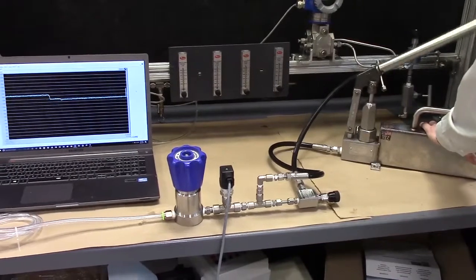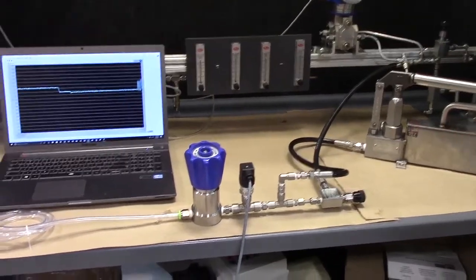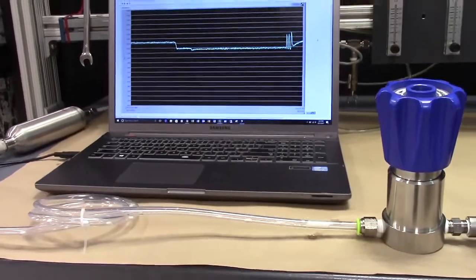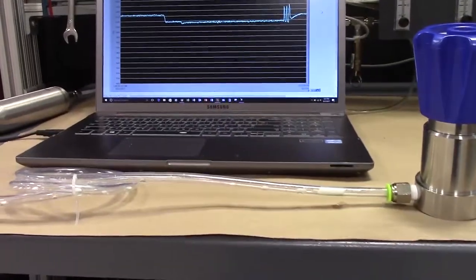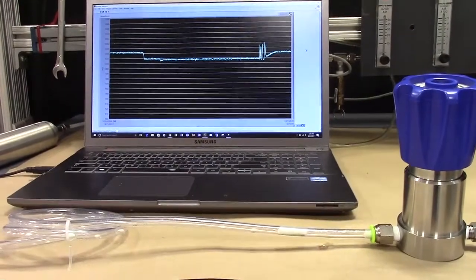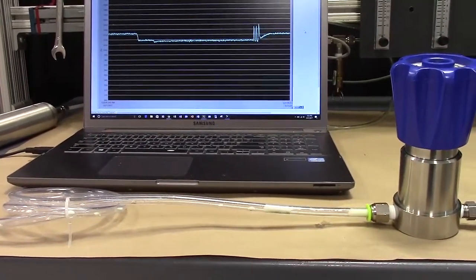So here we have about one liter a minute of nitrogen flow through the spring-loaded back pressure regulator. I've just introduced three pulses of liquid to the system which we see by those three characteristic spikes in the plot of pressure versus time.